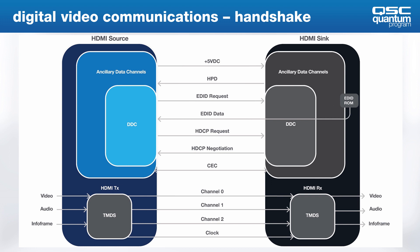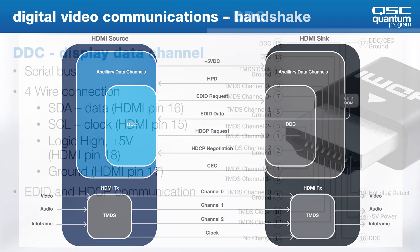If the source is HDCP capable and has sent an HDCP request, then it will perform an HDCP negotiation and, if everything goes well as planned, it will begin to encrypt that video data as needed. The video timing sent by the source is determined through reading the sync's EDID and sending video data compatible with the sync EDID.